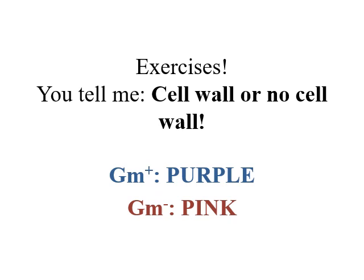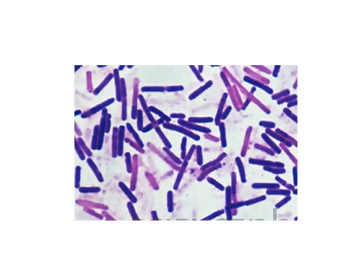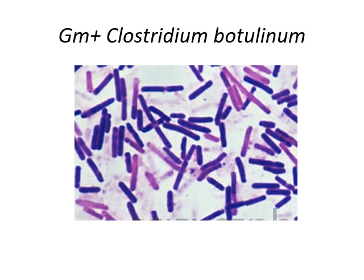Here we see gram negative rods mixed with gram positive cocci. Remember the gram stain colors and tell me: this next image shows bacilli — some look pink due to a poor staining job — but these are gram positive bacilli. This is Clostridium botulinum. Memorize: Clostridium botulinum is a gram positive bacillus that carries out sporulation.